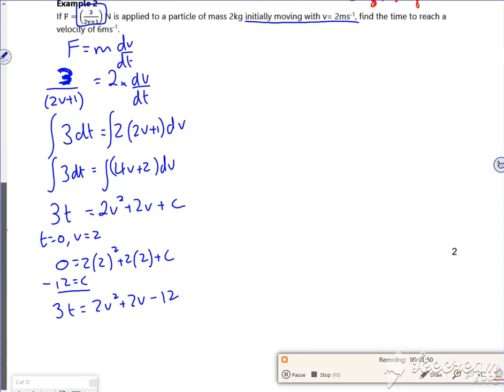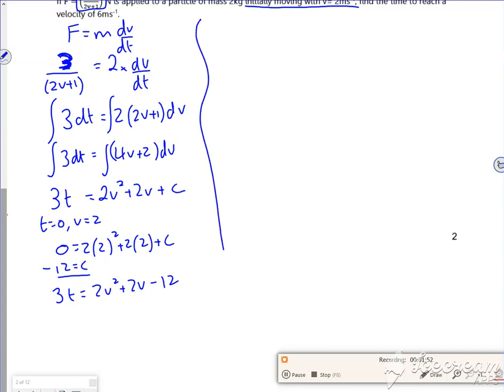So then it says, find the time for it to reach a velocity of 6. So I'm going to find T for v equals 6. So I've got 3 lots of T, it's 2 lots of 6 squared plus 2 lots of 6 minus 12. So that's going to be 72 there, and then divide through by 3 is going to give us 24 seconds, job done.